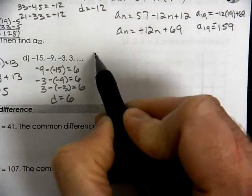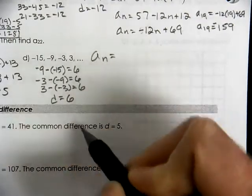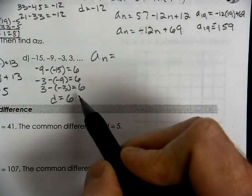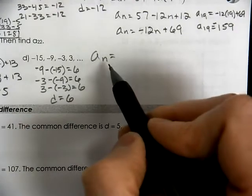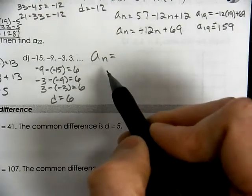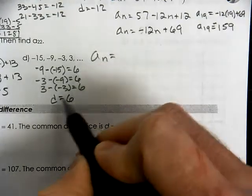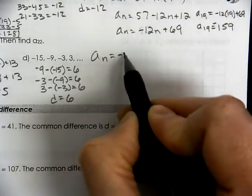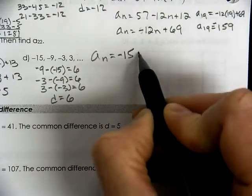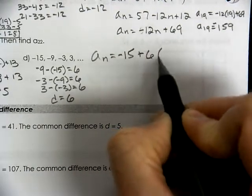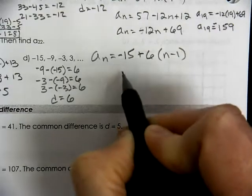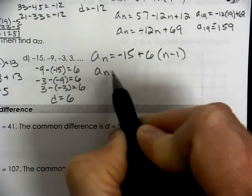So we're going to start out with A of n. Again, this is an arithmetic rule. This happens to be an explicit format. So we're going to take our first term, which is negative 15. We're going to add our common difference, n minus 1.